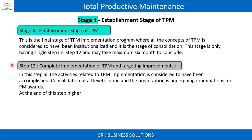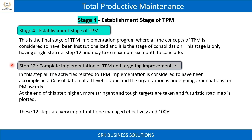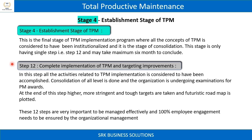Step 12: Complete implementation of TPM and targeting improvements. All activities related to TPM implementation are considered to have been accomplished. Consolidation at all levels is done and the organization is undergoing examinations for TPM awards.